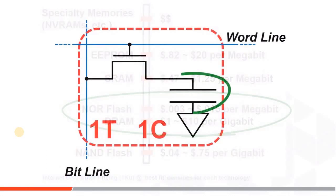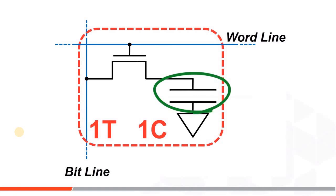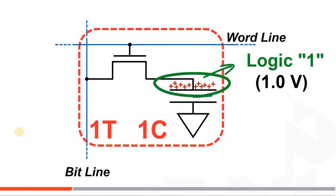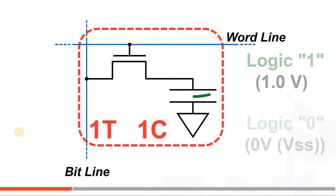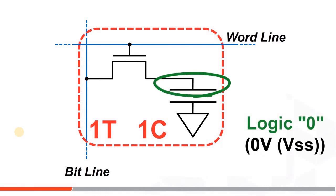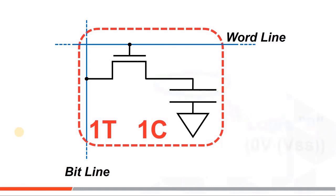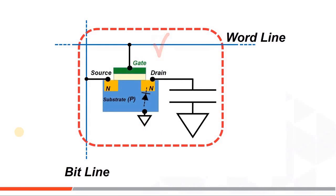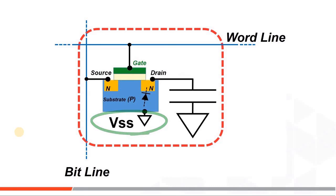The capacitor effectively holds the bit's value. It can be charged up to a high voltage — we'll call that a logic 1, using 1 volt in this example — or discharged to a low voltage, which we'll call a logic 0, equal to VSS or ground. Note that this MOS gate switch sits over a substrate that is connected to ground to make it work.